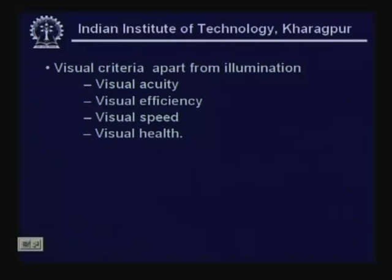Other criteria necessary for eye functioning from the observation standpoint, apart from increased illumination levels, include: visual acuity — how it varies; visual efficiency — how efficiently one observes the required object; speed — the ability to observe within the required time; and health — depending on use, abuse, or age.